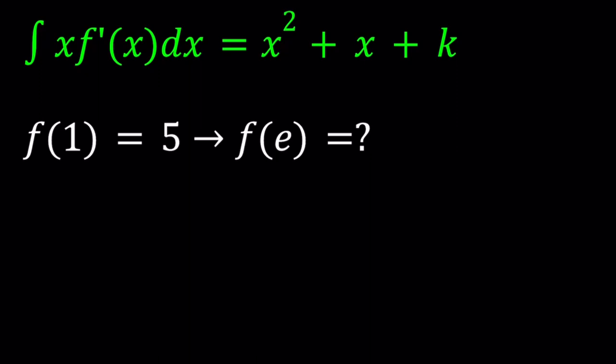We have the integral of something on the left hand side. If we differentiate both sides, since integration and differentiation are inverse operations, they'll undo each other. You can also look at the integrand, which is x times f prime of x, and use integration by parts, but it's not really going to help you. It'll just make it longer. So we're just going to differentiate both sides.